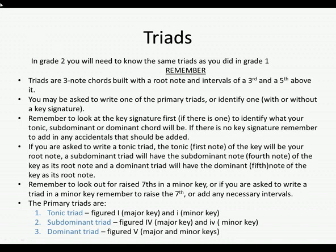In Grade 2, you need to know exactly the same triads as you learned in Grade 1. A triad is a three-note chord built with a root note, and then intervals of a third and a fifth above it. You may be asked to write or identify one of the primary triads with or without a key signature. The primary triads are the tonic triad, subdominant triad, and dominant triad. Always remember to look at the key signature first, to identify what your tonic, subdominant, or dominant chord will be.